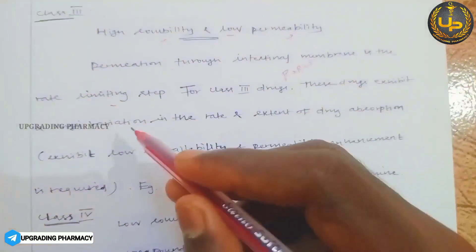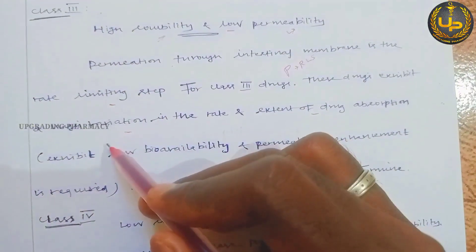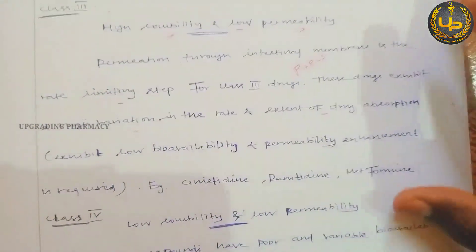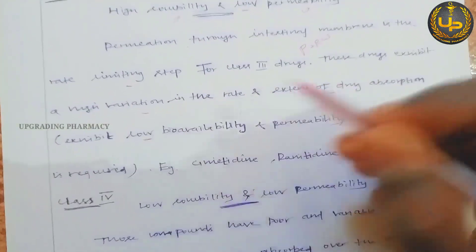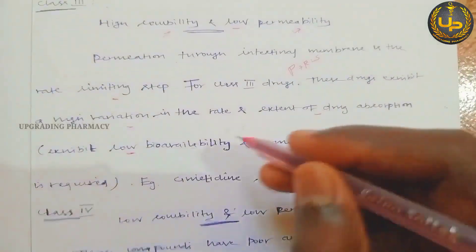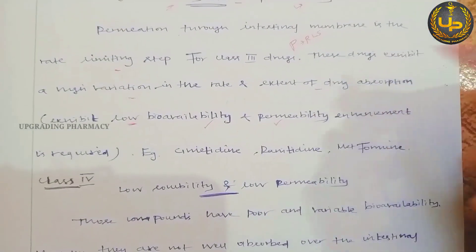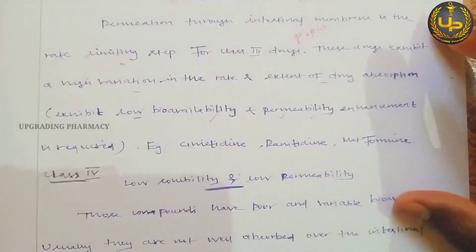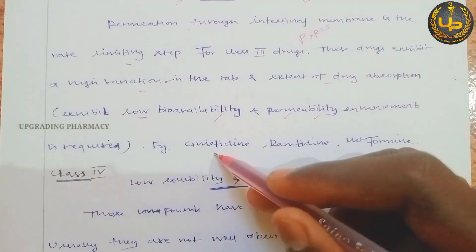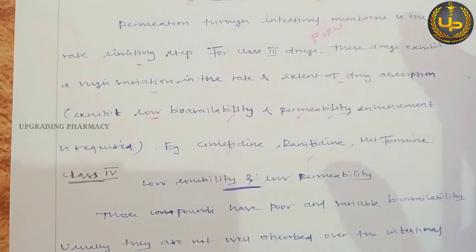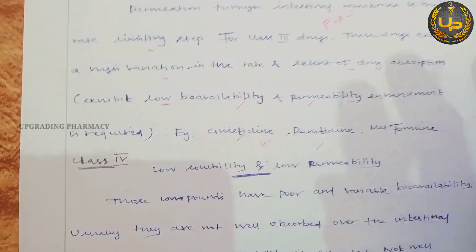In Class 3, permeability is the rate-limiting step because permeability determines the rate of absorption. These drugs exhibit high variation in the rate and extent of drug absorption, and show low bioavailability due to low permeability. Enhancing permeability is necessary for Class 3 drugs. Examples include cimetidine, ranitidine, and metformin — H2 antagonists used to decrease HCl secretion in the stomach.